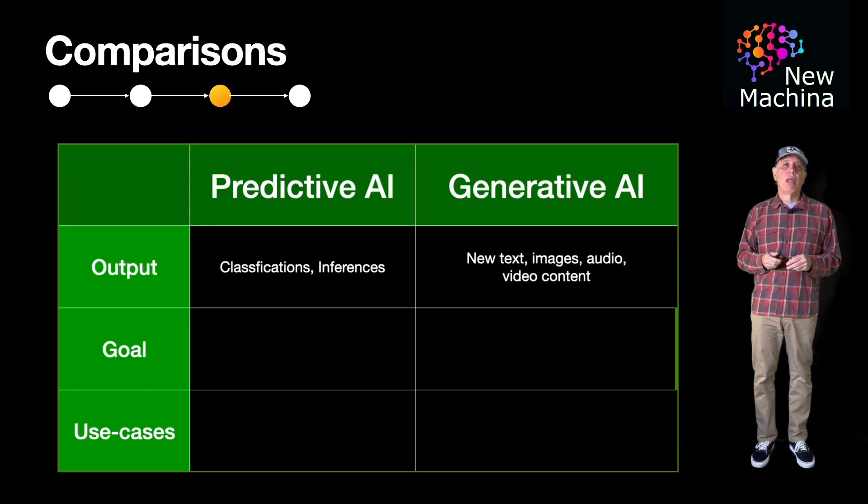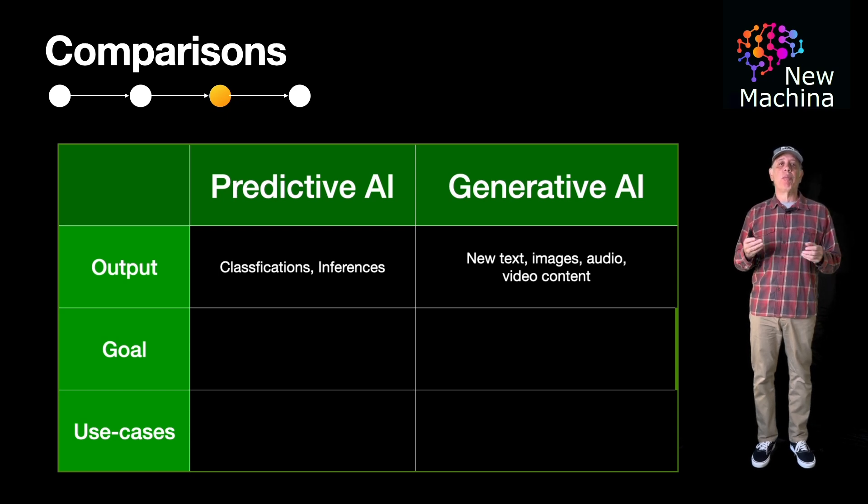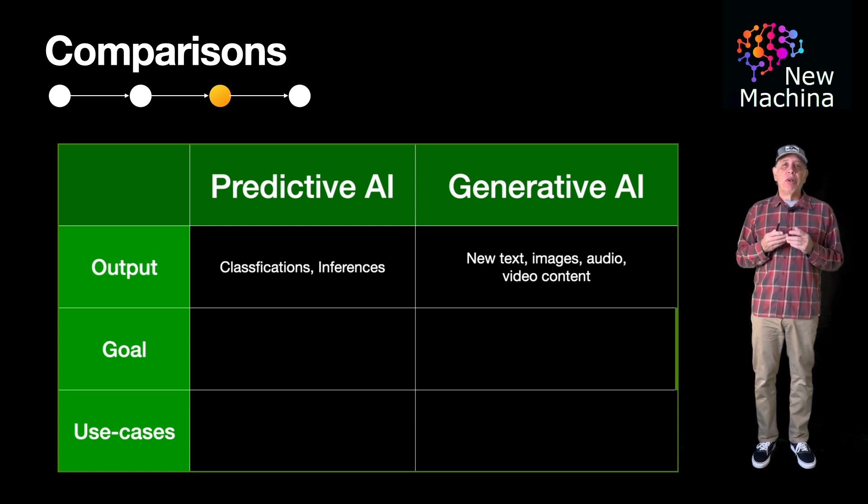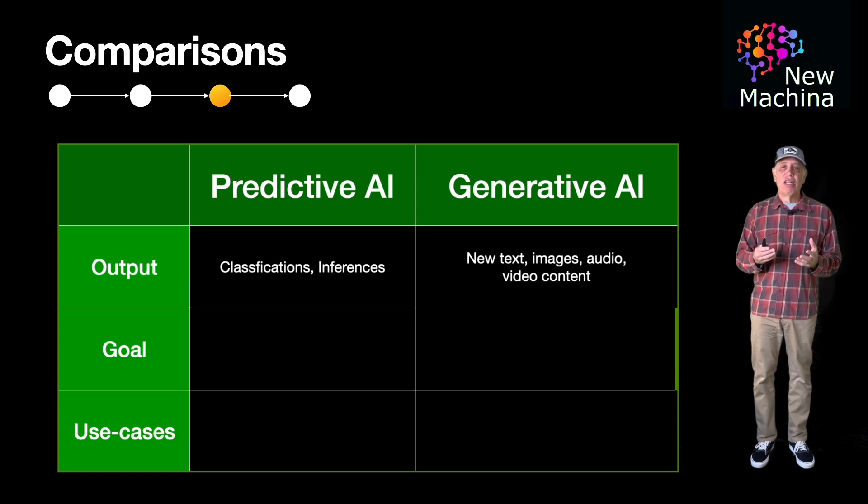Moving on, let's compare predictive AI versus Gen AI. How are they different with respect to output? Well, predictive AI provides classifications or makes inferences given input data, while Gen AI produces new synthetic content that may not have existed in the training data.